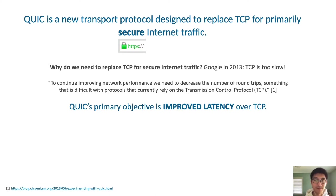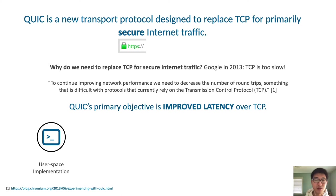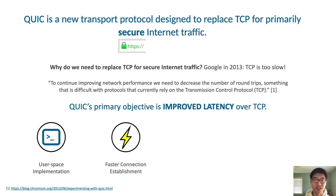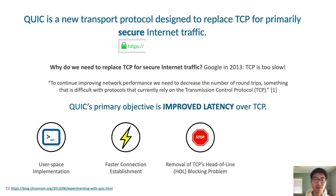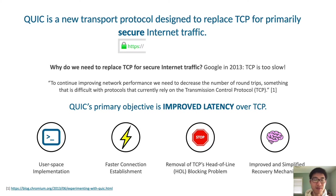QUIC achieves this through four ways. First, QUIC is implemented in user space on top of UDP, which enables implementers to build a TCP-like protocol with all new features necessary for better network performance. Second, QUIC has a faster connection establishment time that takes one less round trip to complete compared to TCP. Third, QUIC removes TCP's head-of-line blocking problem. And fourth, QUIC has improved and simplified recovery mechanisms for handling packet loss.